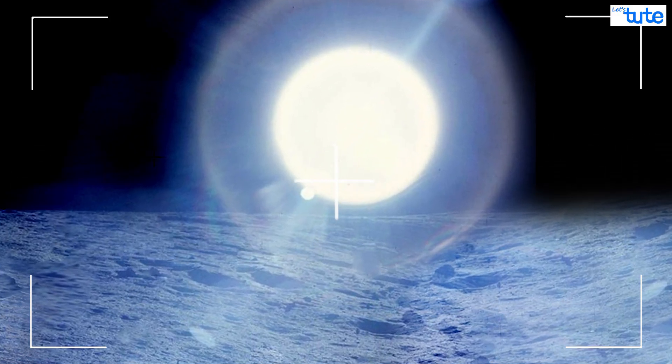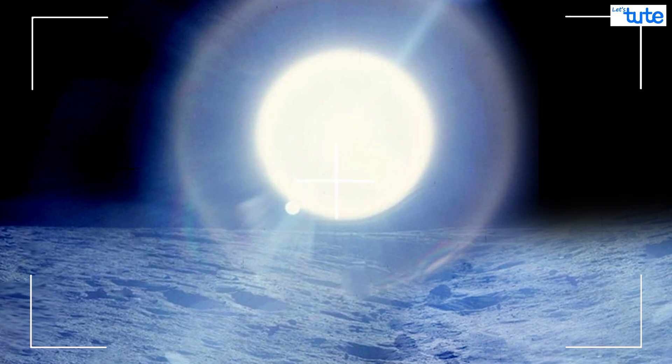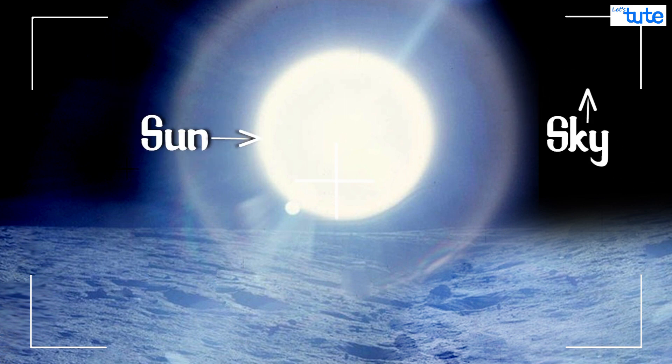Another thing we can see is the photos of sun taken from the moon. Here we can see the sun looks white while the sky looks black. This gives us another clue.